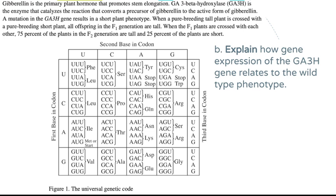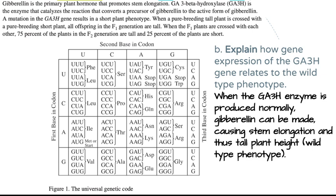For Part B: if the GA3H enzyme is produced normally — no mutation — gibberellin can be converted from its precursor, allowing the plant to grow a tall stem, producing the wild-type phenotype. Make the connection: gene → enzyme → conversion of precursor → active gibberellin → tall plant height.